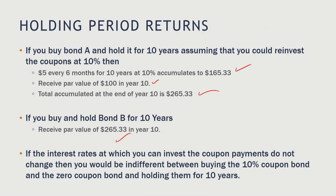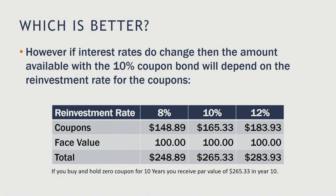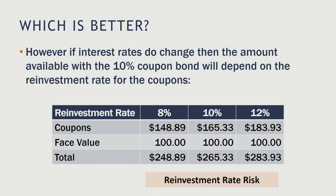However, if interest rates do change, the amount available with Bond A will depend on the reinvestment rate of the coupons. For example, if rates immediately shift from 10% to 8%, coupons accumulate to $148.89, plus the $100 face value, giving a total of $248.89. If rates shift to 12%, coupons accumulate to $183.93, plus $100 face value, totaling $283.93. This means Bond A exposes the insurance company to reinvestment rate risk, depending on what happens to interest rates over the life of the bond.